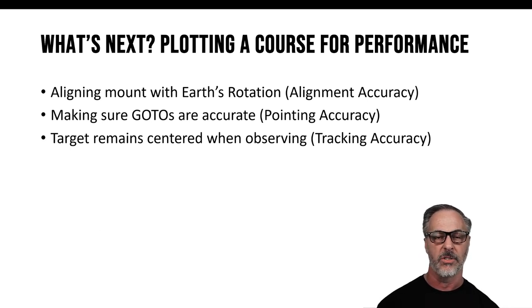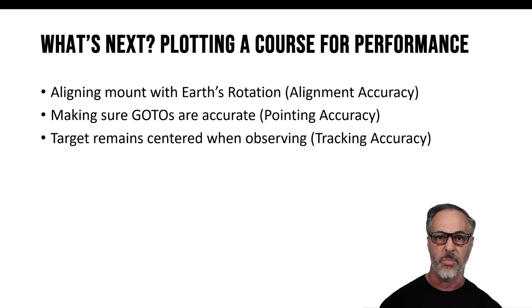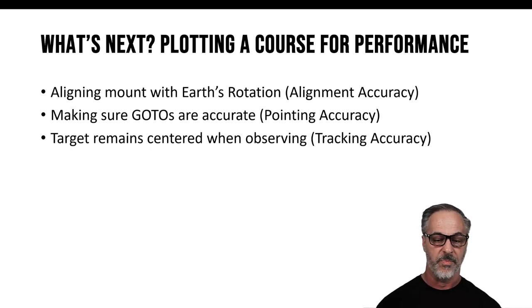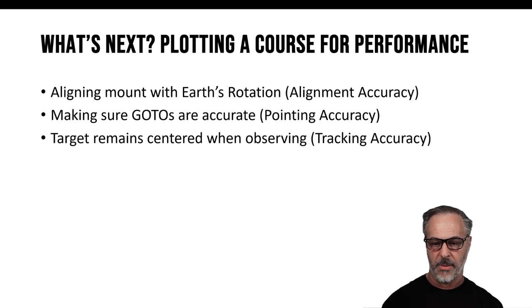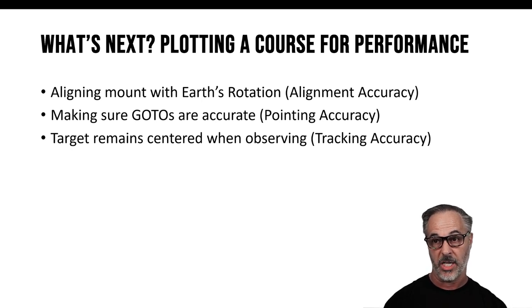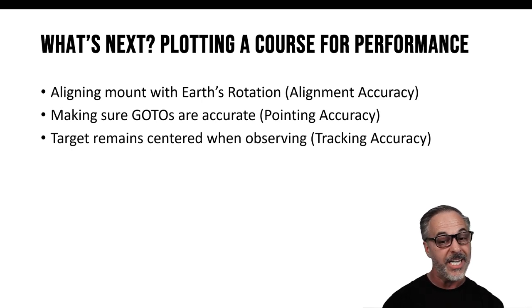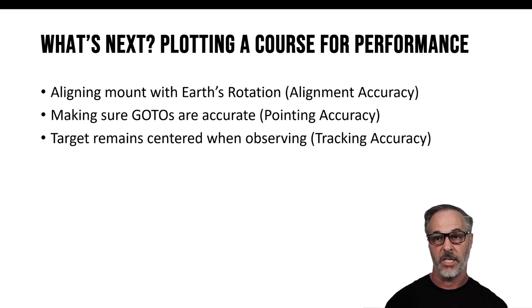The first is polar alignment — it's very important to align your mount with the Earth's rotation. If you're in the Southern Hemisphere, you're aligning at the South Pole rather than the North Pole. The goal is to have your mount correctly set up so that as it's offsetting the rotation of the Earth, it's doing it as accurately as possible. Depending on the way in which you're going to be using your mount, you'll be doing it a little bit differently.